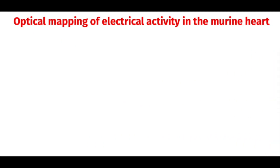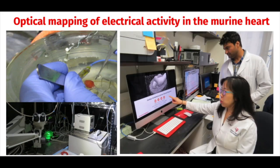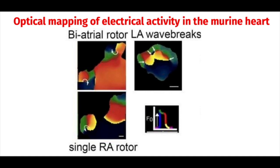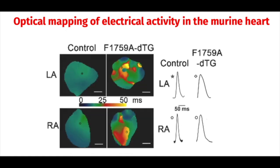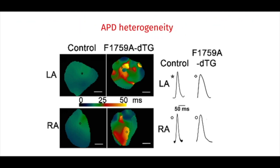We subsequently performed epicardial surface optical voltage mapping of the anterior surface of Langendorff-perfused F1759A double transgenic hearts, which revealed a variety of activation patterns, including a single dominant clockwise or counterclockwise rotational reentry of one or more cycles. Sometimes we would see figure-of-eight reentry or multiple rotational reentries in either atria or both atria, and sometimes we also saw multiple wave breaks with fibrillatory conduction. The F1759A double transgenic mice had prolonged action potential duration compared to their control littermates, and the action potential duration maps show heterogeneity compared to the control mice, which had a more homogeneous action potential duration map of their left atrium.